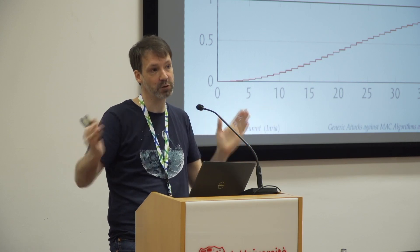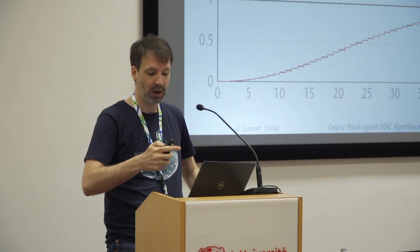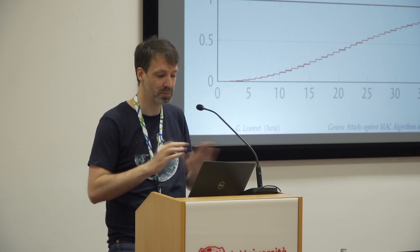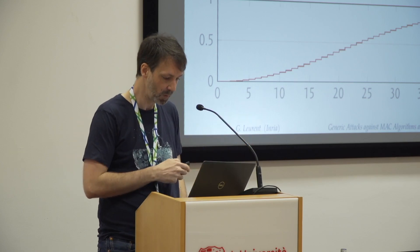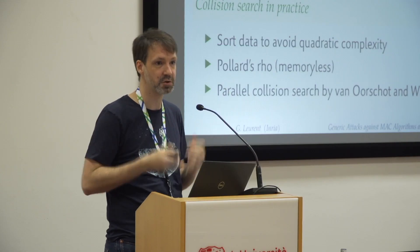You can also apply this with two distinct sets A and B: if both have size roughly sqrt(N), you expect a non-empty intersection. To find collisions in practice, the naive approach draws r values and compares all pairs — complexity r-squared, which is very inefficient. A better approach: build your list, sort it, then scan for repeated adjacent values. This requires storing about sqrt(N) values, which becomes the limiting factor for large hash functions. For a 128-bit hash, complexity is 2^64 in time but storing 2^64 elements is completely impossible.